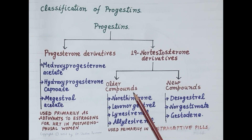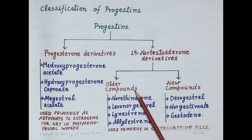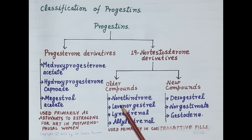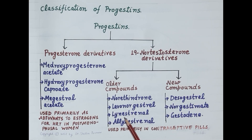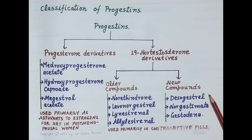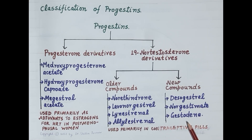Older 19-nortestosterone derivatives exhibit weak androgenic activity, which is almost absent in the newer compounds. Examples of older compounds are norethindrone, levonorgestrel, lynestrenol, and allylestrenol. Examples of newer 19-nortestosterone compounds are desogestrel, norgestimate, and gestodene. This is in brief on progesterone and its derivatives.